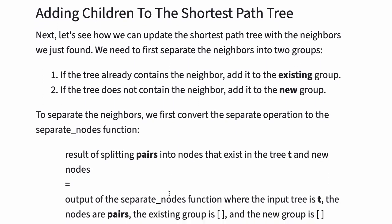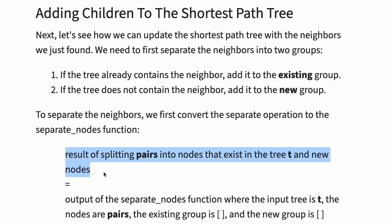Next, let's see how we can update the shortest path tree with the neighbors we just found. We need to first separate the neighbors into two groups: one, if the tree already contains the neighbor, add it to the existing group; two, if the tree does not contain the neighbor, add it to the new group. To separate the neighbors, we first convert the separate operation to the separate nodes function. The result of splitting pairs into nodes that exist in tree t and new nodes equals the output of the separate nodes function where the input tree is t, nodes are pairs, the existing group is empty, and the new group is also empty.